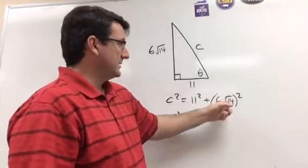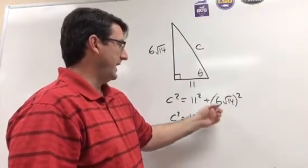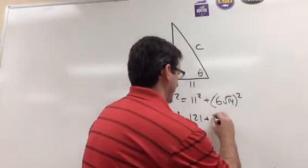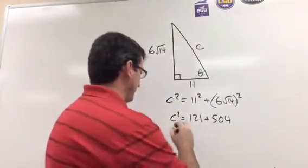Alright, so 6 squared is 36, square root of 14 squared is 14, and then 36 times 14 is 504. So now C squared is equal to 121 plus 504, which is 625.